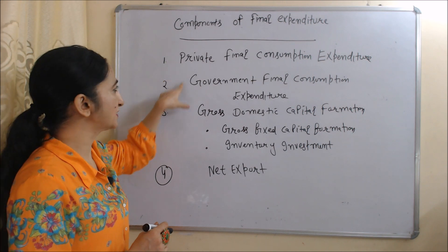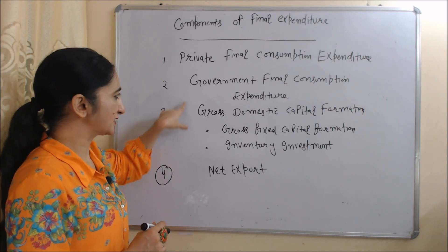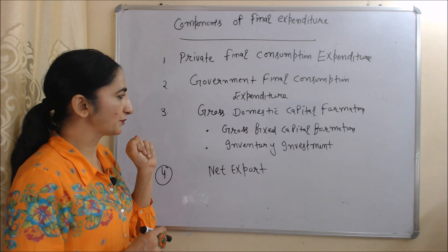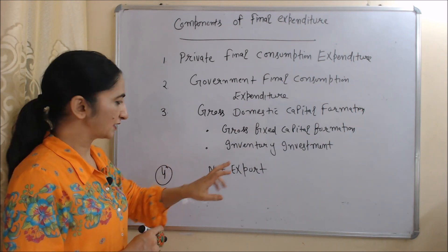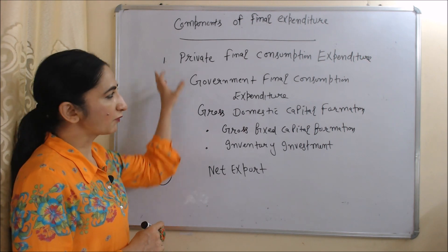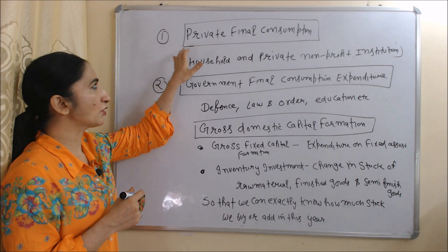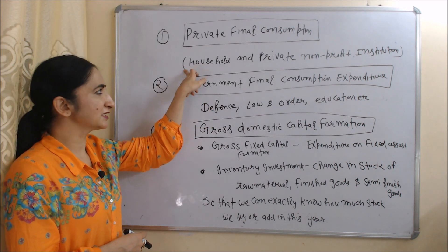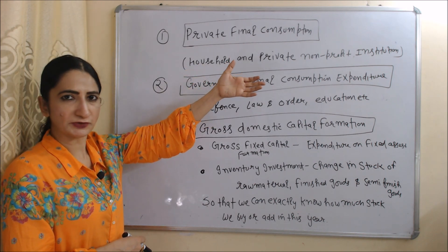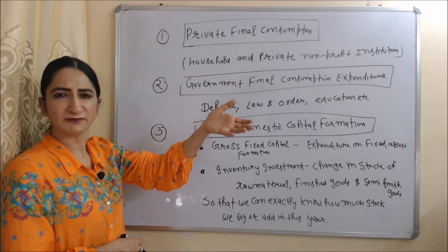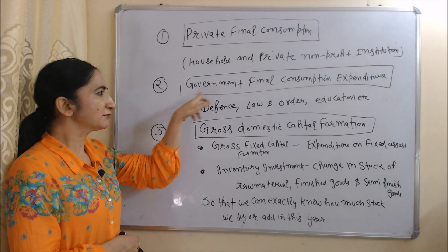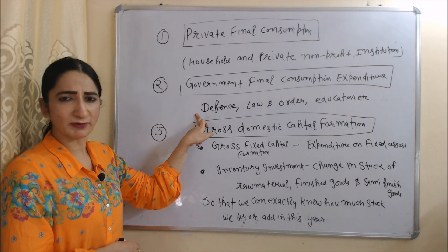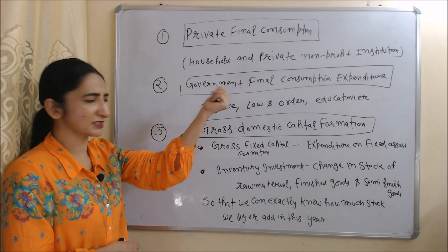Components of final expenditure: first is Private Final Consumption Expenditure, second is Government Final Consumption Expenditure, third is Gross Domestic Capital Formation (which has two parts: gross fixed capital formation and inventory investment), and last is Net Export. Private final consumption includes expenditure done by households and private non-profit institutions on all types of consumer goods, for example TV, mobile, AC, etc. Government final consumption expenditure includes expenditure done by government, for example on defense, law and order, and education.